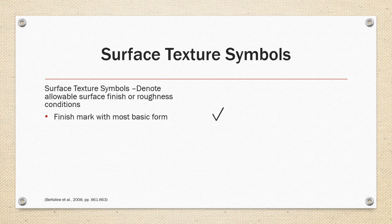The finish mark denotes that a surface will have a value above the V-shape to denote the maximum allowable surface roughness. If two numbers appear, then the surface roughness must fall between the two values. This form of the mark does not specify any other requirements.